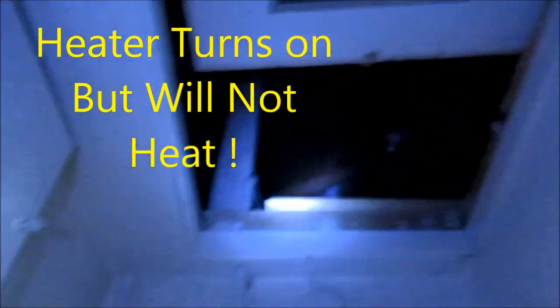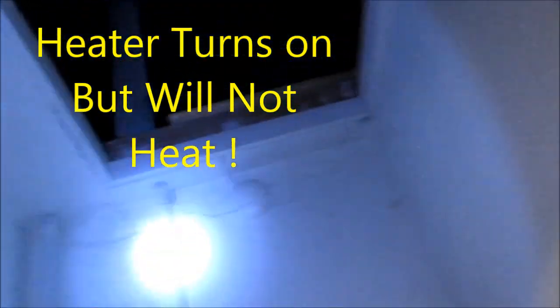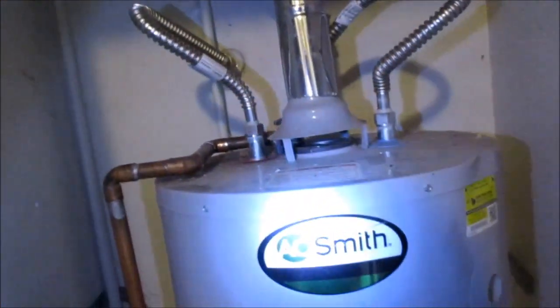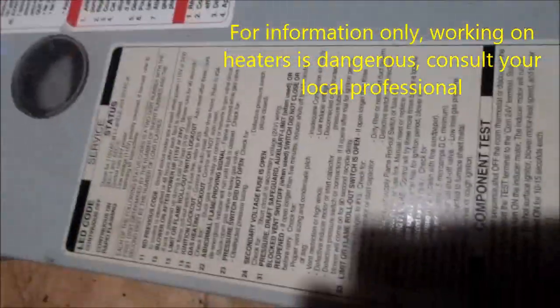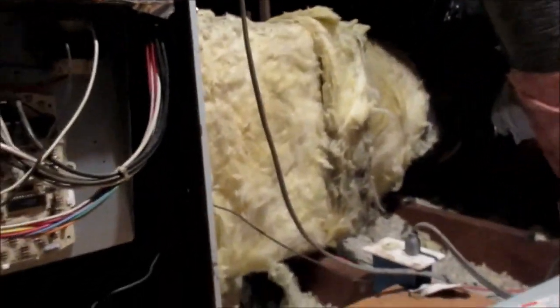A heater problem up there somewhere. You have a light, just stand on the water heater to get up there. Okay, so here's your code status light. We have red continuous light here and we have the door switch bypassed. This is a Bryant.